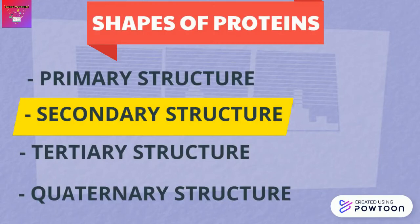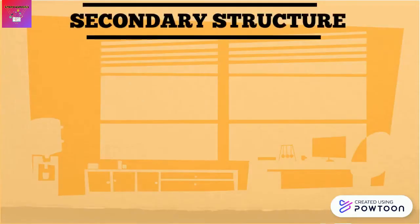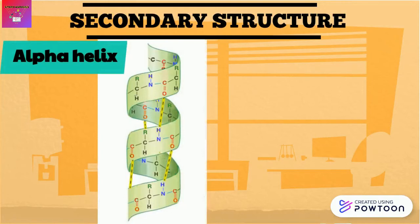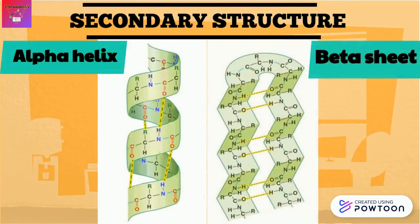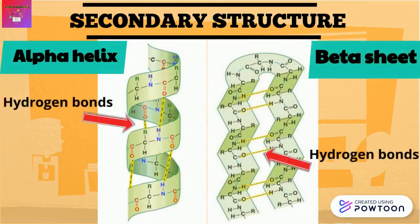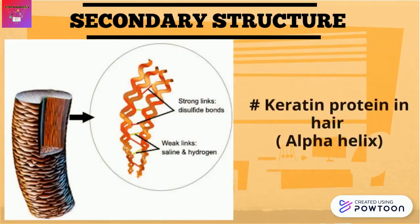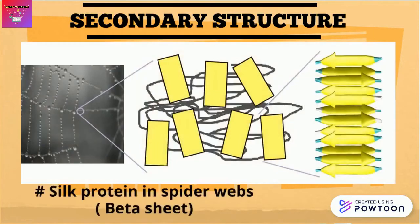As for the secondary structure, it starts to occur when polypeptide chains coil or fold in a particular way. Basically, we have two types of secondary structure: the alpha helix and the beta sheet. Each polypeptide can have multiple alpha helixes and beta pleated sheets. The spiral shape of alpha helixes and the pleated folding of beta sheets are supported by hydrogen bonding between amino acid chains. Examples of secondary structure proteins include keratin protein in hair and silk protein in spider webs.